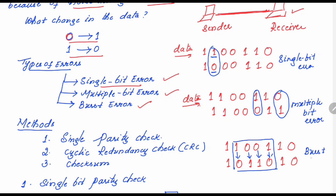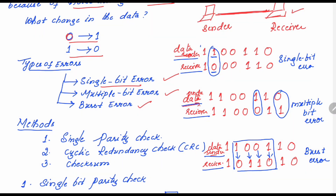To summarize: the sender sent the data, but the receiver received it in a different form in each case. These are the different types of errors — single bit error, multiple bit error, and burst error. We have different methods for error detection, and the first method is called single parity check.